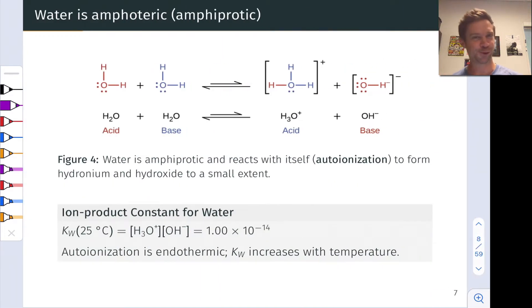The most important and famous amphoteric or amphiprotic substance is water. Water has an acidic proton, but it also has basic lone pairs on the oxygen. That proton can be transferred and the result is hydronium, the conjugate acid of water, and hydroxide, the conjugate base of water.